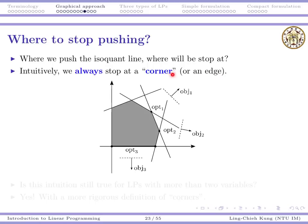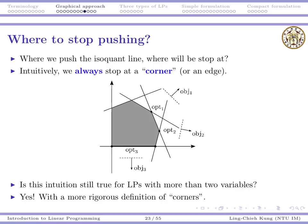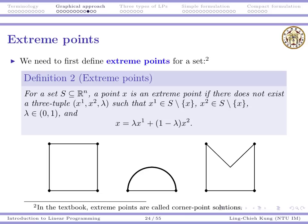It seems there is no other possibilities. We always stop at a corner or an edge which contains a corner. Or if this is a three-dimensional problem, we may stop at a surface which again contains a corner. So we get an intuition about corners. It seems we always, at the place we stop, have one or some corners. We're asking whether this intuition is still true for LPs with more than two variables. Indeed, that's true. But to say more about that, we need a more rigorous definition of corners.